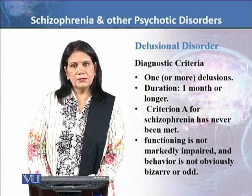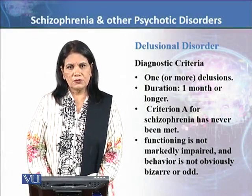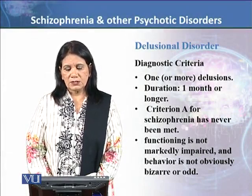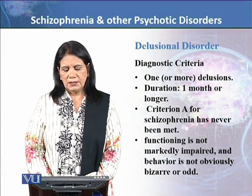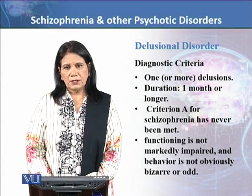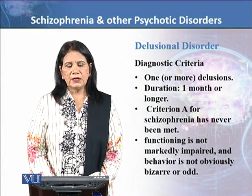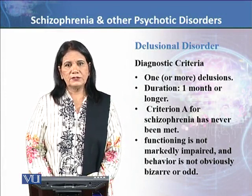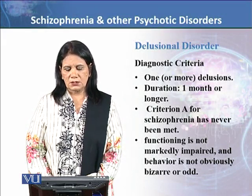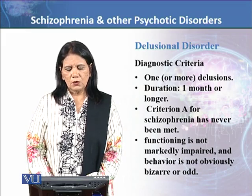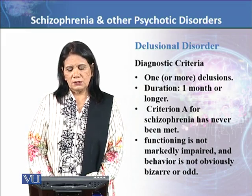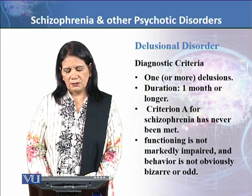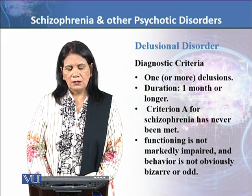The next type of disorder we will talk about is delusional disorder. As the name indicates, the marked feature is delusions — one or more delusions — and the duration should be one month or longer.